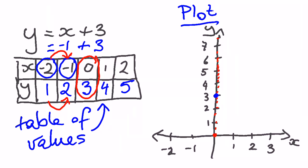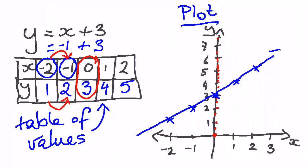Let's fill in all the others. Starting at (negative 2, 1): I go across to negative 2 and up 1. Then (negative 1, 2) is here. (0, 3) I've already done. (1, 4) is here. (2, 5) is here. Now I draw a line joining all these points. I'll put arrows on the ends, which means the line doesn't end — a line theoretically goes on forever. Those arrows show you could keep following it forever.